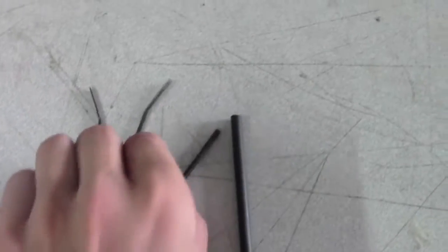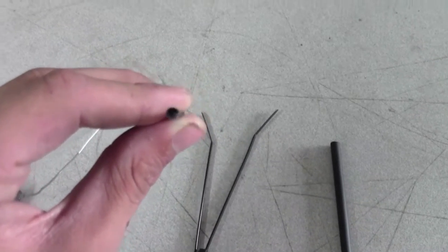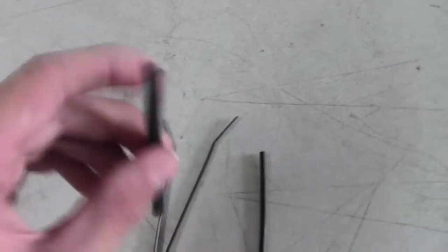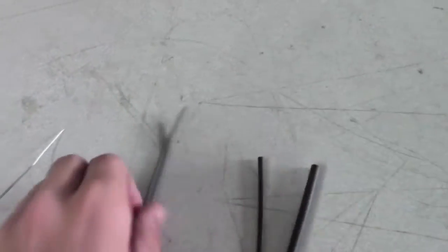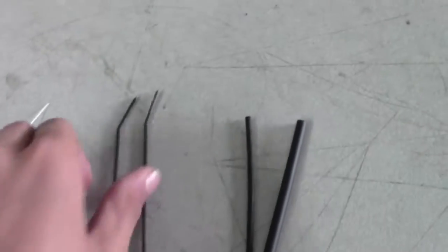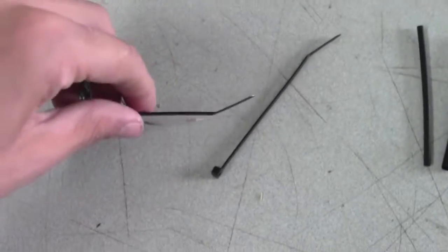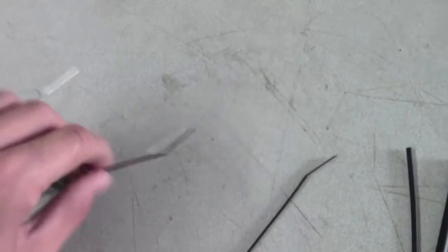A few materials you're going to need for this. You're going to need a thin piece of heat shrink, just like, I don't know exactly what size it is, I'll have it down in the description. You're going to need a thicker piece of heat shrink, and then you're going to need two zip ties.